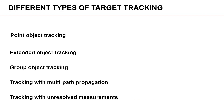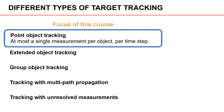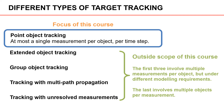To summarize, we have discussed the following types: point object tracking, extended object tracking, group object tracking, tracking with multipath propagation, and tracking with unresolved measurements. In this course we are going to focus on point object tracking, where we have at most one measurement per object. The other four types are outside the scope of this course; however, point object tracking can be generalized in a straightforward way to the other types. Note that extended object tracking, group object tracking, and tracking with multipath propagation all involve multiple detections per object, while tracking with unresolved or merged measurements involves multiple objects per detection.